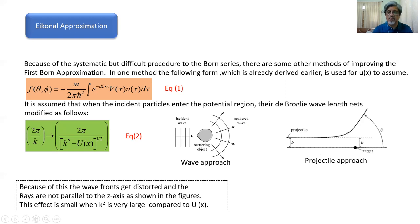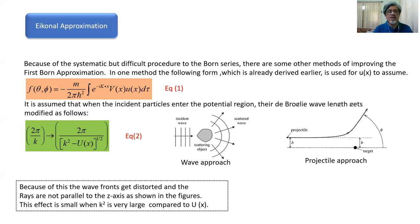We are considering two points: one point in the region where there is no potential, and another point within or after the potential region. Because of this, the wavefronts get distorted and the rays are not parallel to the z-axis, as shown in figure number two. The particle travels parallel to the z-axis, but whenever it enters the potential region it gets deviated. This effect is small when k² is very large compared to u(x).